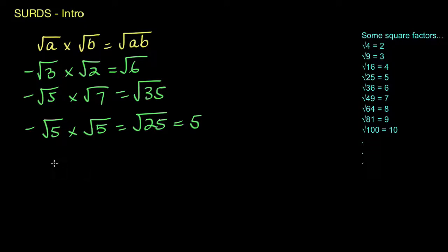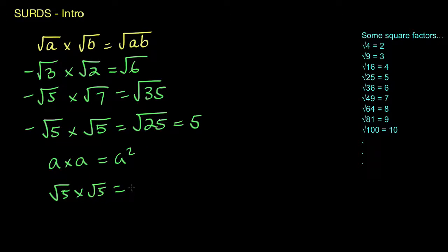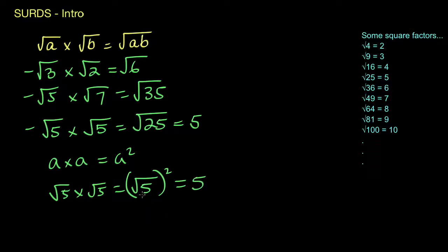You might also notice that the square root of 5 times the square root of 5 is the same as saying a times a in algebra — and a times a gives you a squared. So we're saying the square root of 5 times the square root of 5 is the square root of 5 squared. Squaring and square rooting are inverse operations: if you square 5 you get 25, and square rooting 25 reverses that back to 5. When you see a square root being squared, you end up back where you started — the square and the square root cancel out.